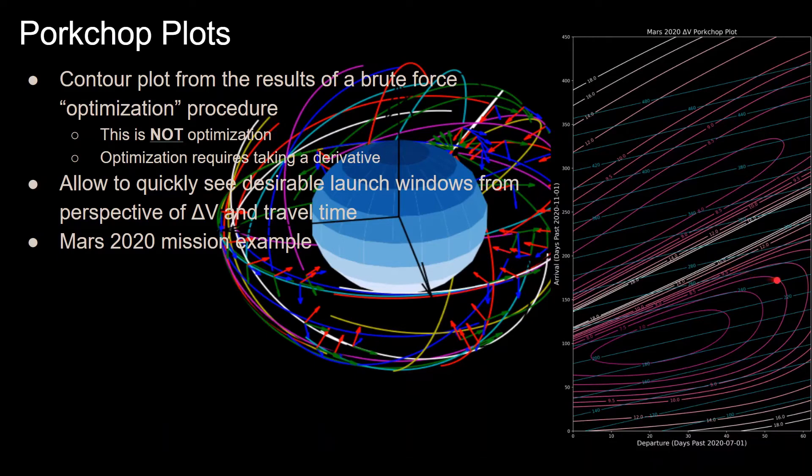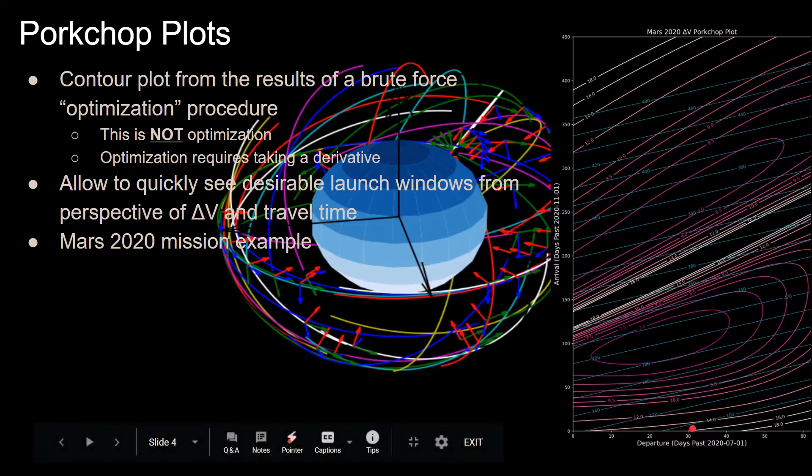Now Mars 2020, what they did is they launched on July 30th, so that corresponds to right here at x equals 30. They're going to get there around February 18th, which corresponds to this region here, which makes sense because they wanted to use as little delta V as possible while also not having too long of a transfer time of roughly 180 days.